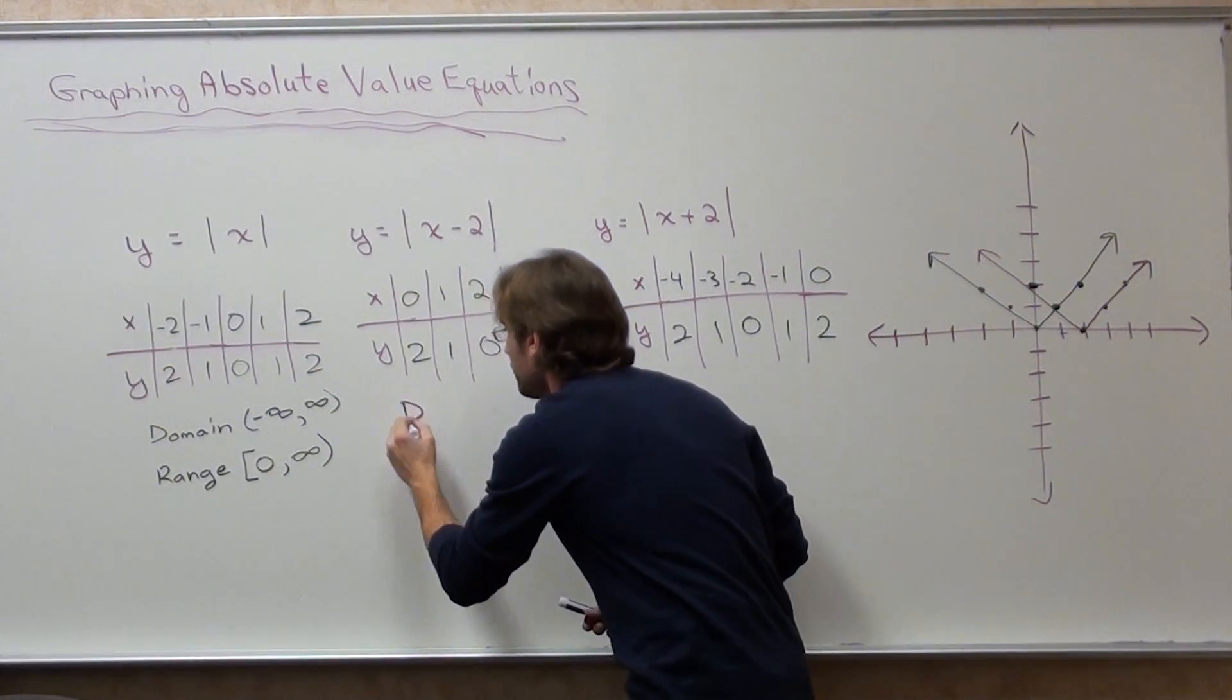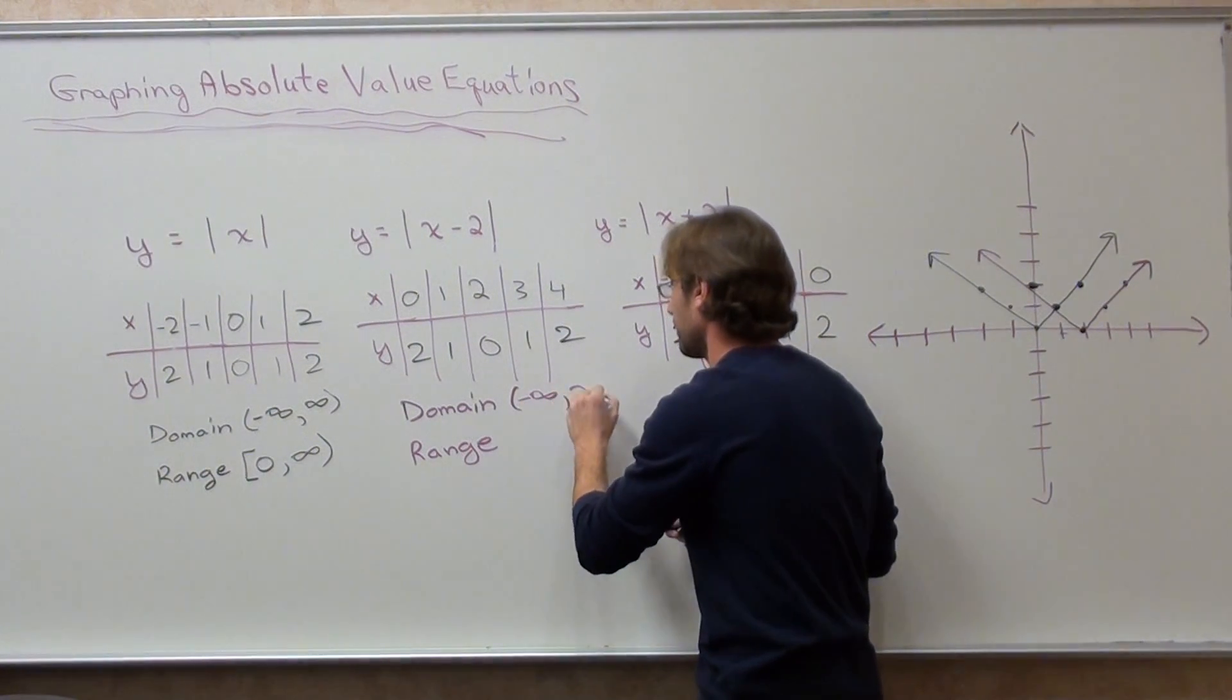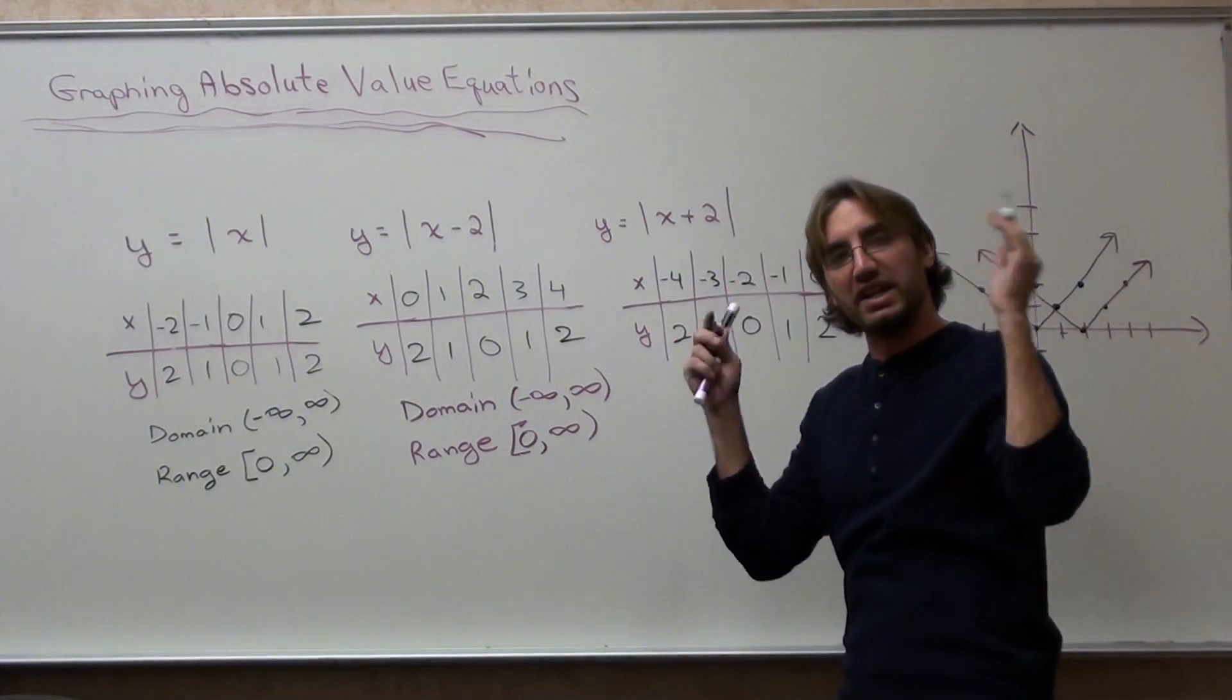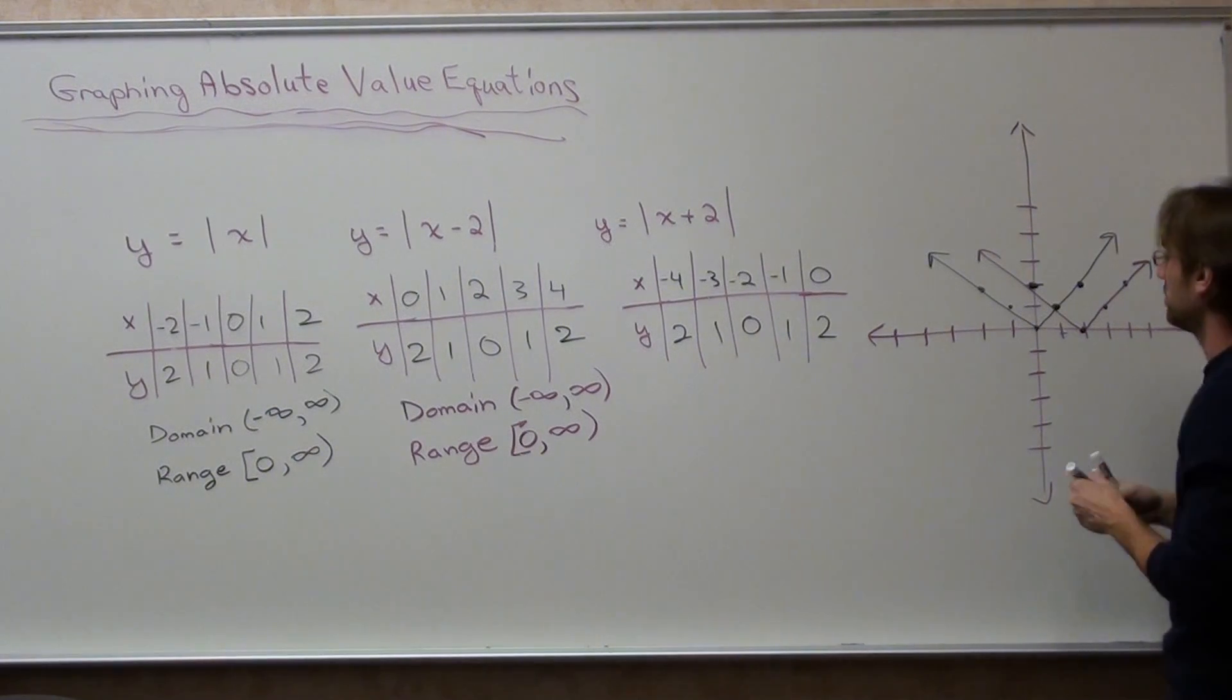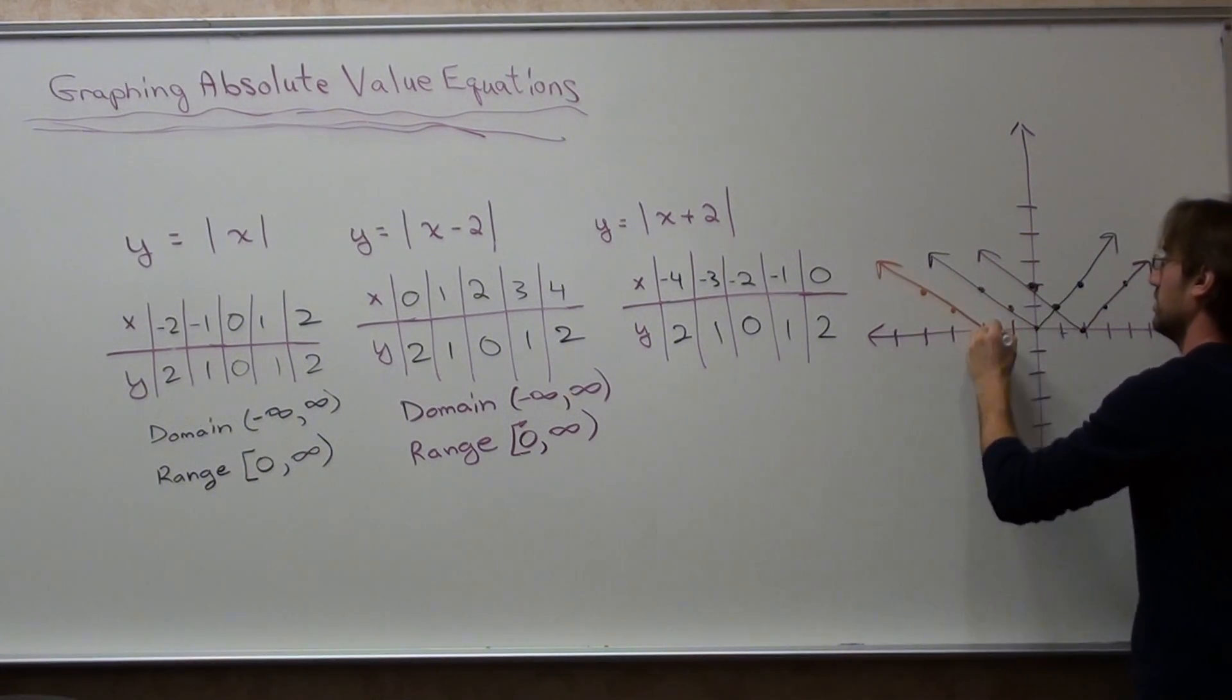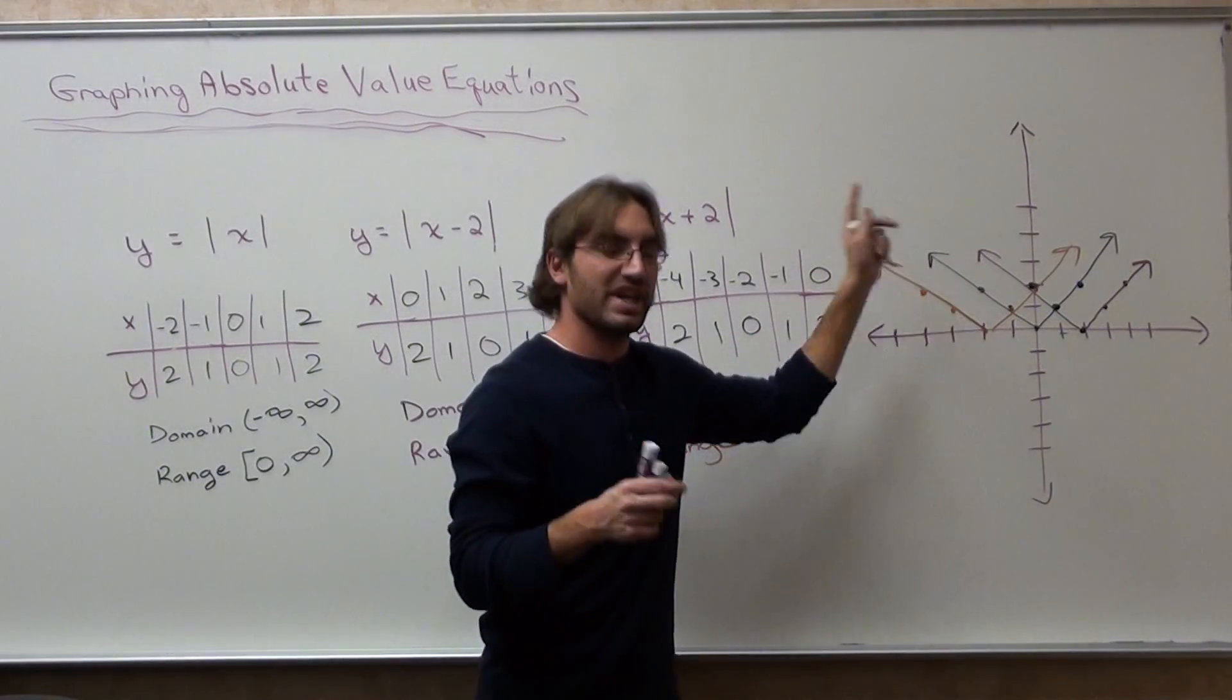Finishing this off really quickly. And I got it in black, purple, and brown for the respective graphs. The domain goes forever both ways. And the range stops at zero and goes all the way up. Last one. Negative four, two. And the graph shifts to the left two spots. Domain and range of the brown graph is exactly the same as the previous two.